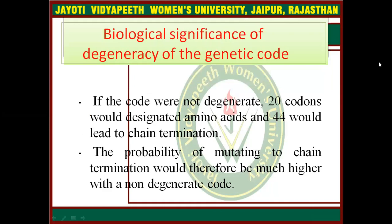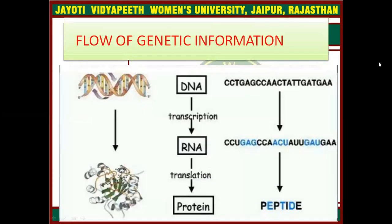Biological significance of degeneracy of the genetic code: if the code were not degenerate, only 20 codons would designate amino acids and 44 would lead to chain termination. The probability of mutating to chain termination would therefore be much higher with a non-degenerate code. The flow of genetic information is: DNA is transcribed to RNA by transcription, and RNA is translated to protein by the translation process.